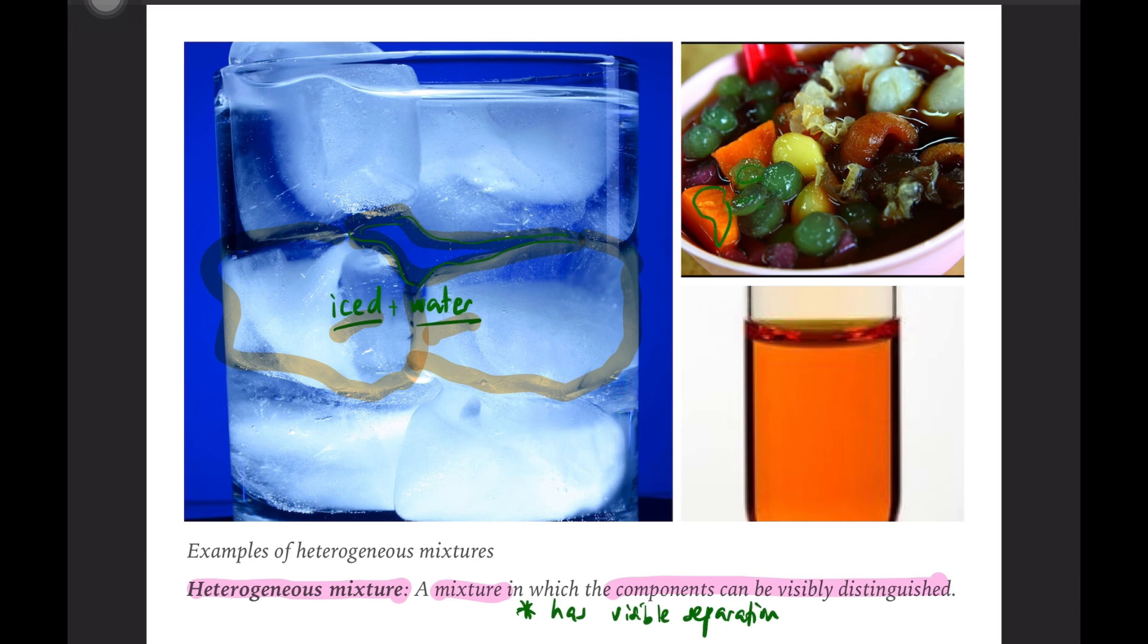Next, we look at the second and third examples. Both of these clearly show visible separation. There are layers, visible boundaries between components. That's why obviously all of these are heterogeneous mixtures.